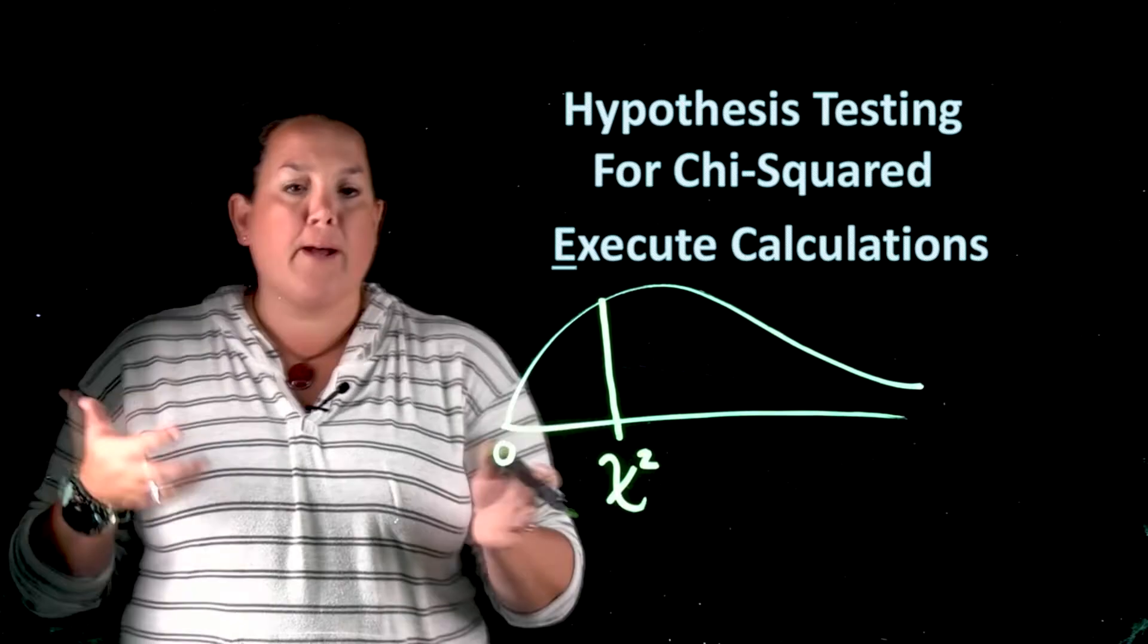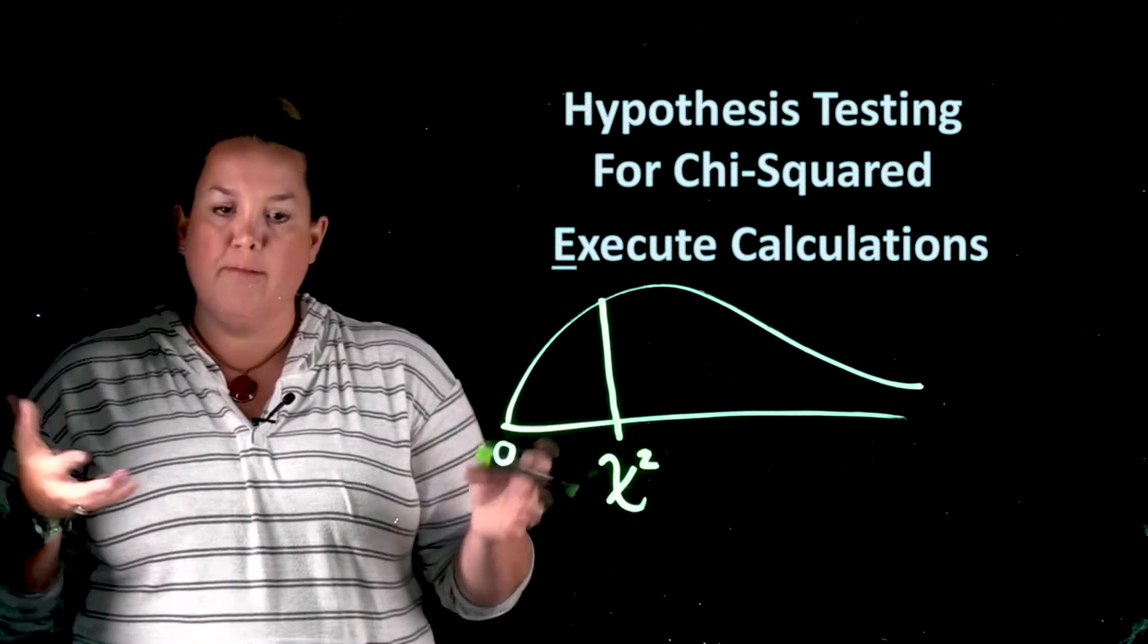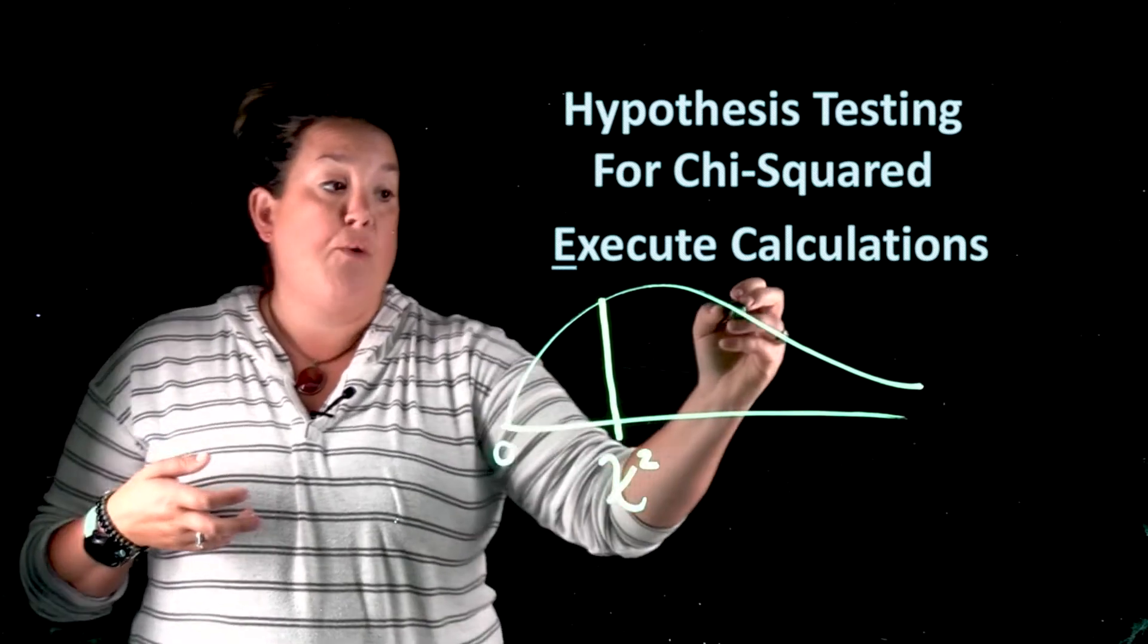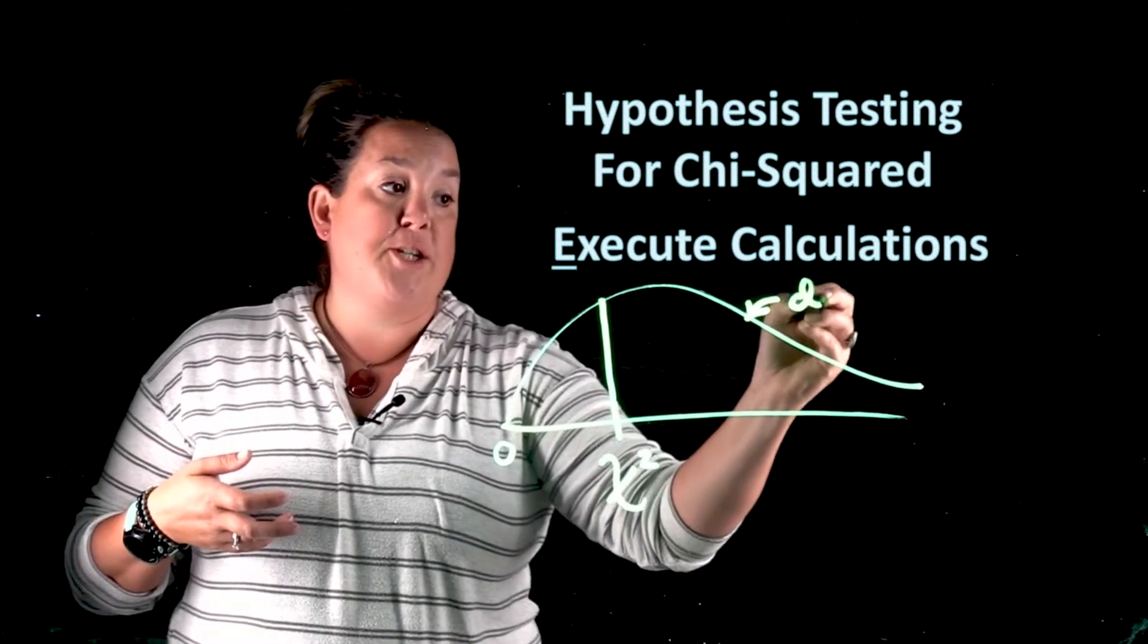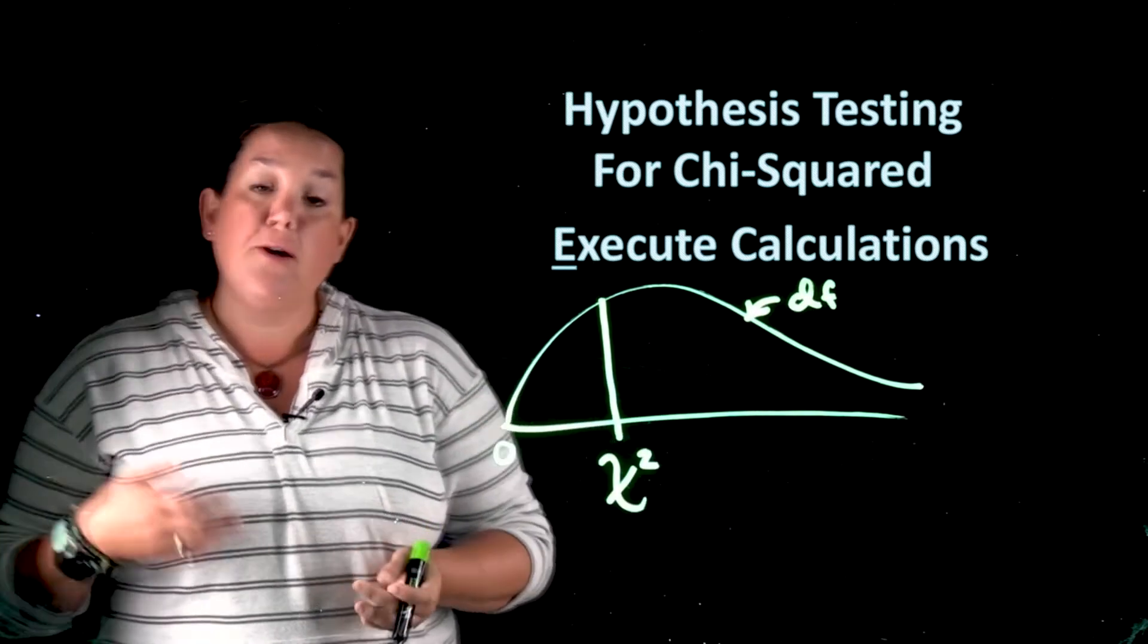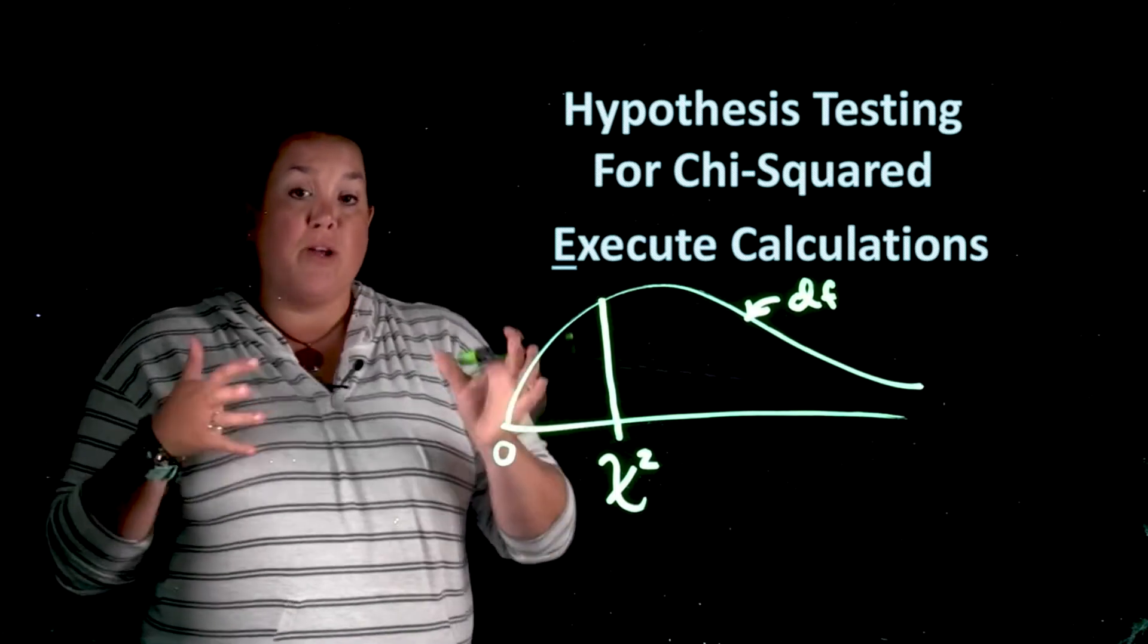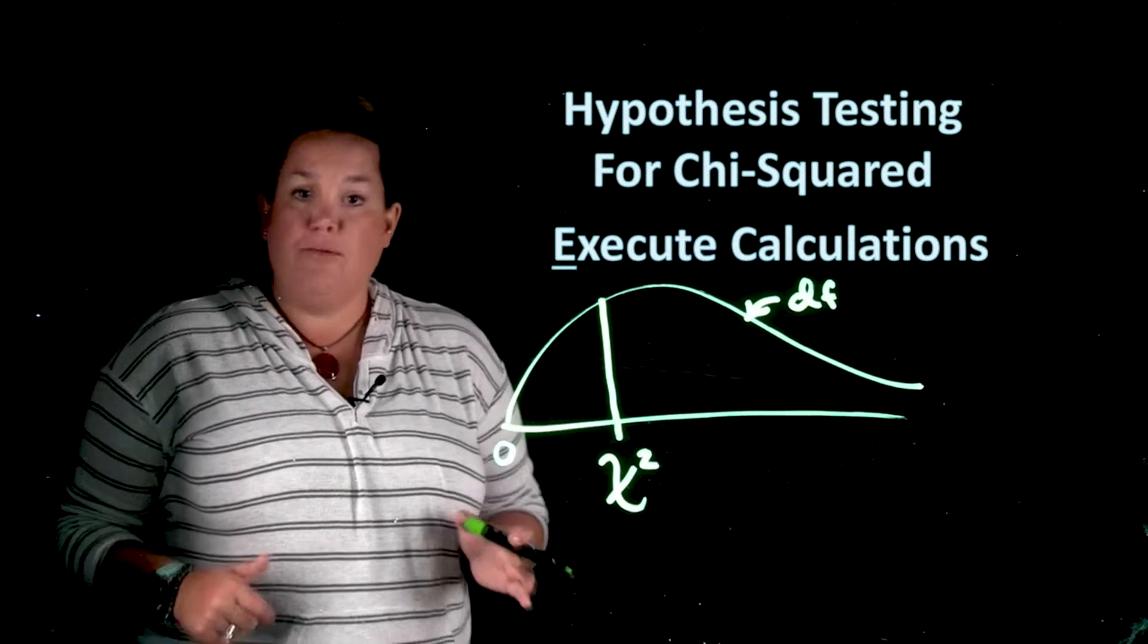Now technically what happens with the chi-squared is it's going to give you a location on this curve. So the chi-squared is some number that you're going to find and it's going to be a location on this chi-squared distribution, which, remember, these distributions change depending on degrees of freedom. So we'll have different distribution shapes based on the degrees of freedom. But the chi-squared gives you a location on the curve, so that's the start of it.